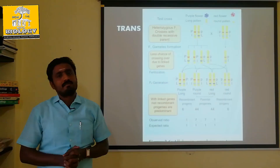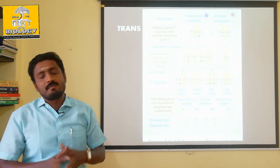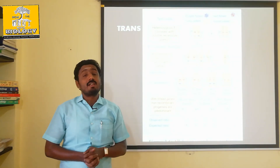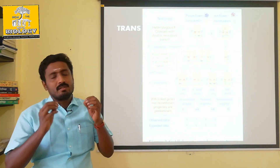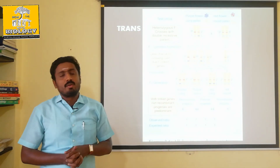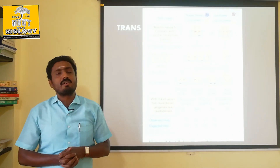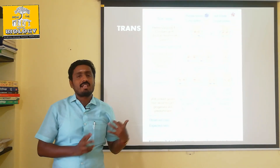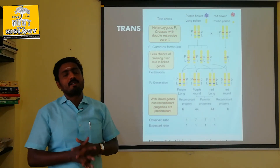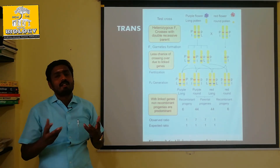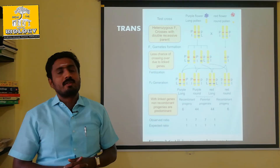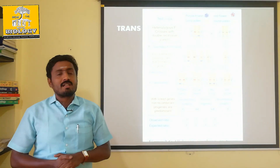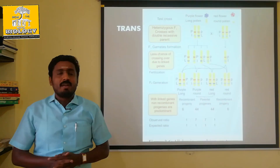That is what we are looking for, and we can see that in the dihybrid cross. The law of independent assortment has been proved. The gene controlling colour and the gene controlling the length of pollen will be present in the same chromosome — this is a linked gene. That is why the parental character is maximum, in a 1:1:1:1 ratio. Thank you for following us.